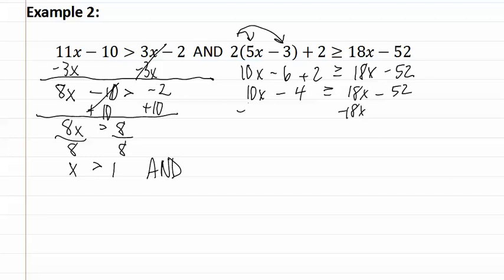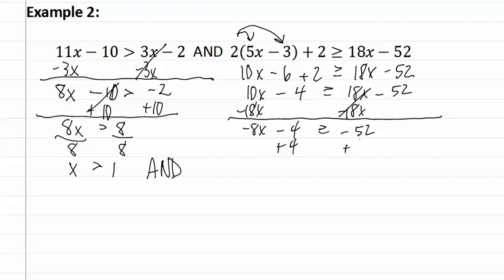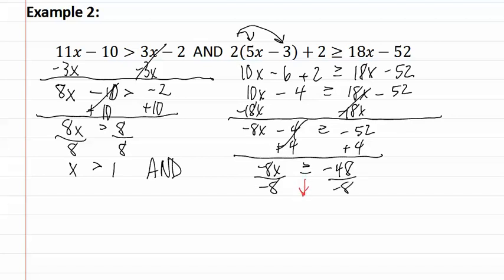We subtract 18x from both sides, giving us negative 8x minus 4 is greater than or equal to negative 52. We then add four to both sides and get negative 8x is greater than or equal to negative 48. We divide both sides by negative eight, and since we divided by a negative, we need to flip the sign, making it less than or equal to. So x is less than or equal to six.